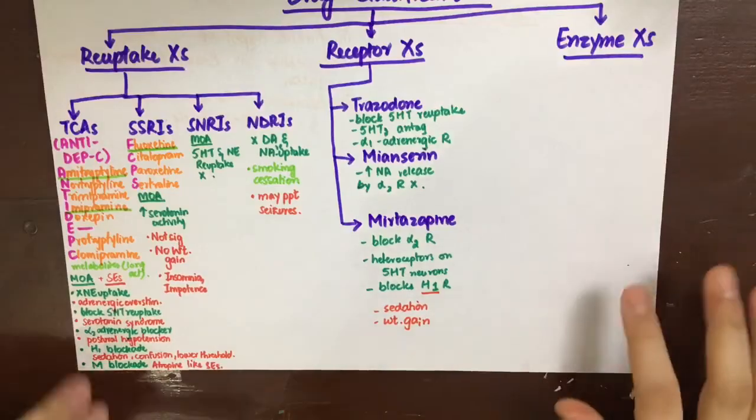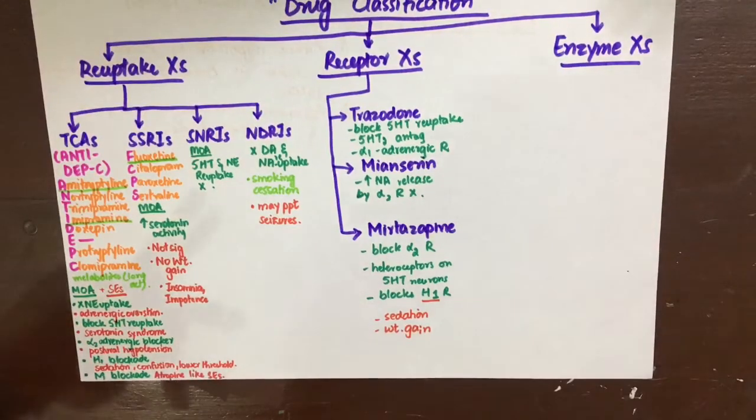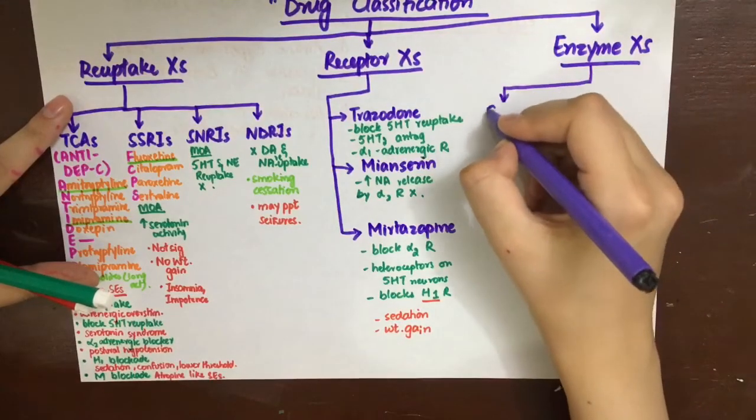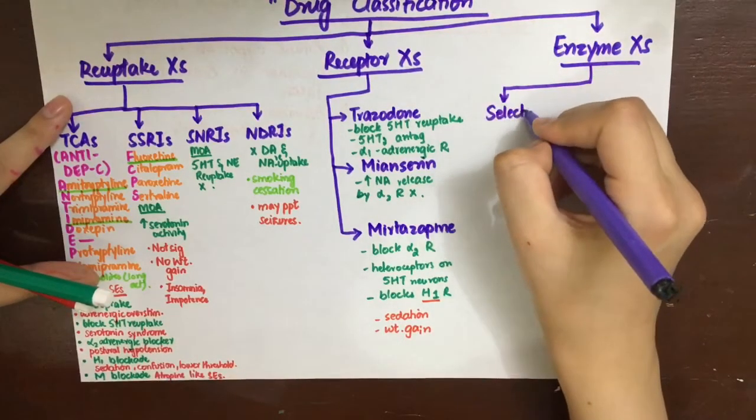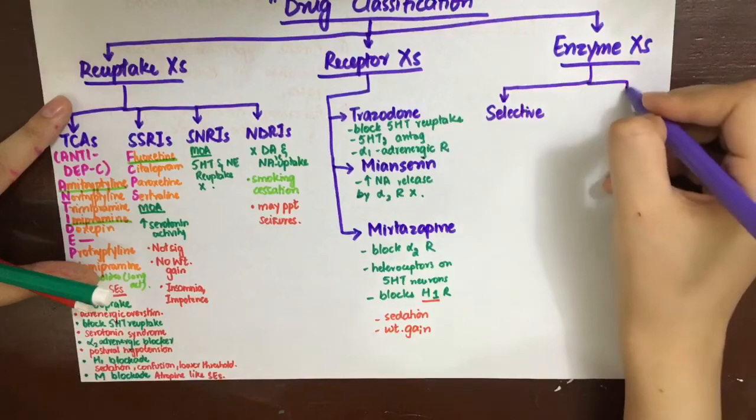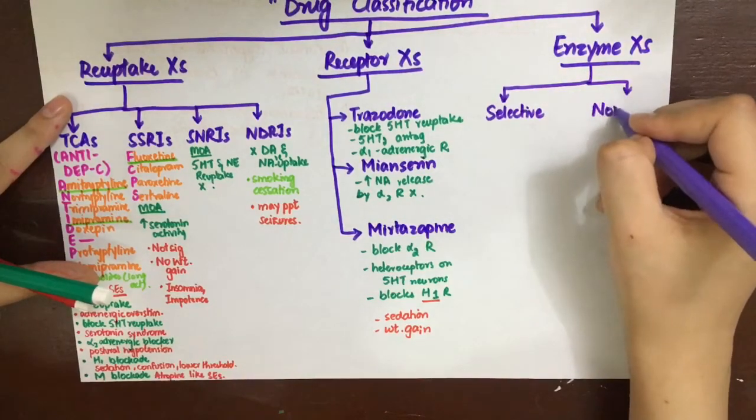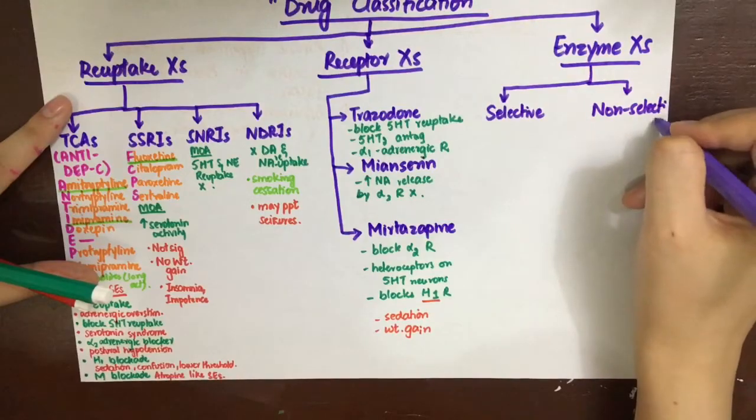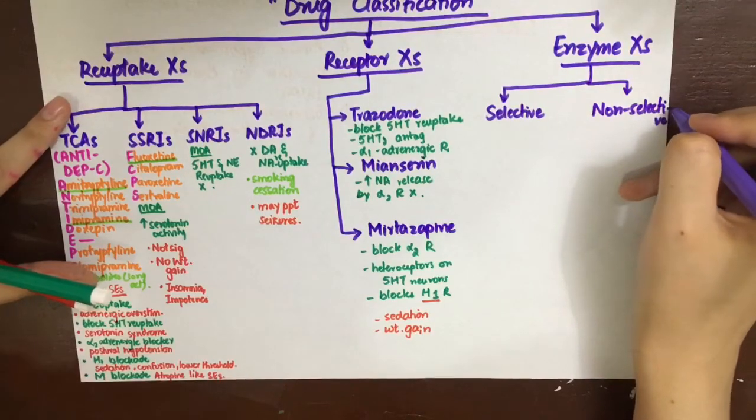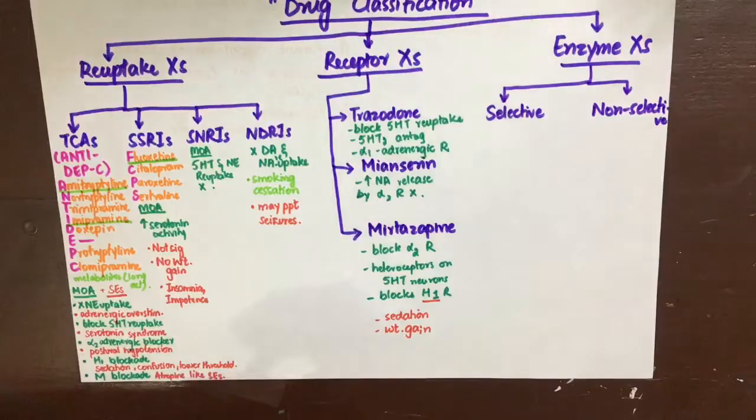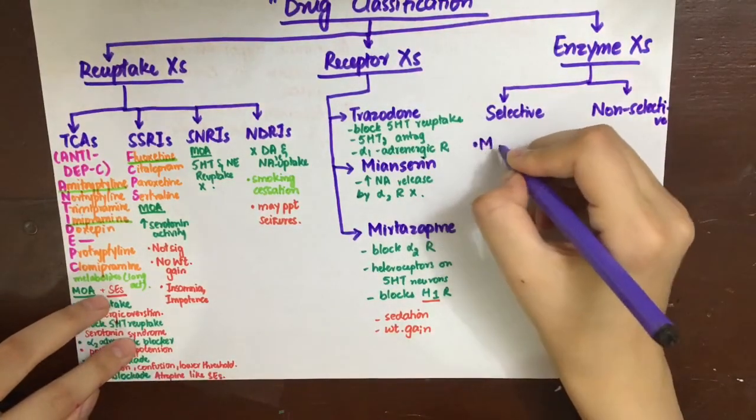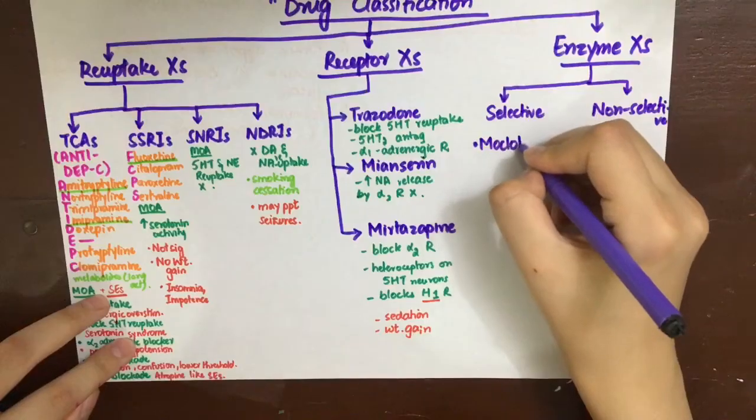Coming to the last group of drugs that act on the enzymes that are responsible for the metabolism of these monoamines. They are divided into selective and non-selective. The selective ones have only MAO-A blocking activity, while the non-selective ones have both MAO-A and MAO-B enzyme inhibiting activity. MAO inhibitors are mitochondrial enzymes that are involved in the metabolism of biogenic amines. Now there are two forms.